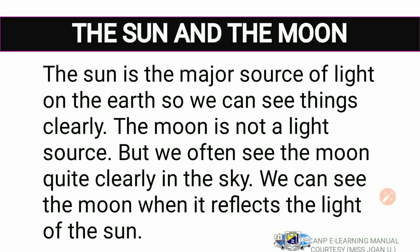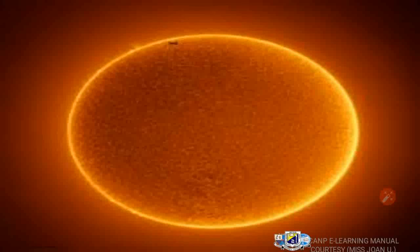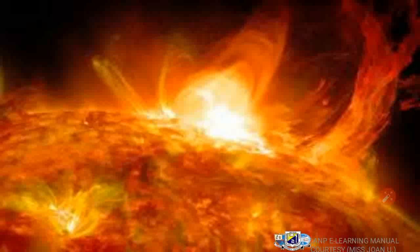The Moon is not a light source — take note, the Moon is not a source of light. What happens is that we often see the Moon quite clearly in the sky. We can see the Moon when it reflects the light of the Sun. But because of how it appears to us, it seems like a light. It is not. The Sun is not just a source of light but a source of heat energy as well.